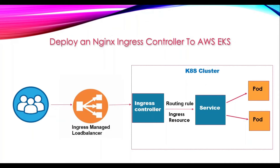Let's explore this architecture and see how traffic flows from the user all the way to the pod. Starting with the user — this could be a client, a mobile application, or someone on their browser sending an HTTP request. That request is routed to an ingress-managed load balancer, which is automatically provisioned in AWS when you deploy an ingress controller in your Kubernetes cluster.